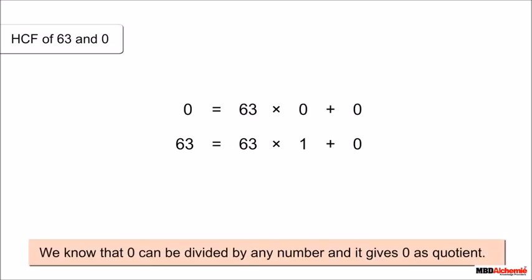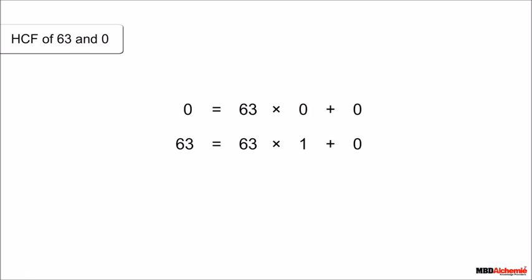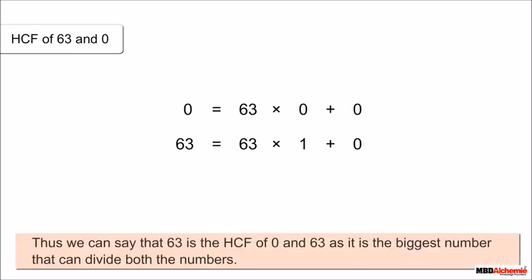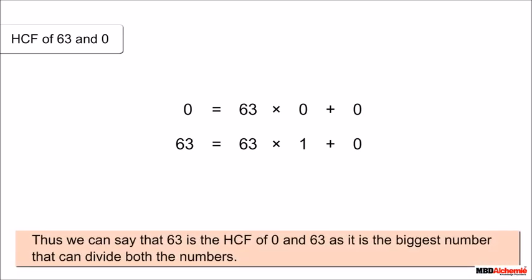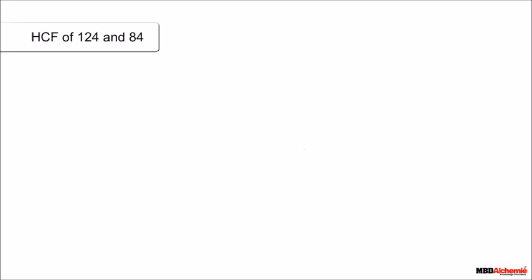Can we find the HCF of 63 and 0? We know that zero can be divided by any number and gives zero as the quotient. The biggest number that can divide 63 is 63 itself, giving zero as the quotient. Thus, 63 is the HCF of 0 and 63, as it is the biggest number that can divide both.